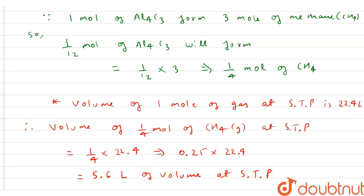So, this is our final answer: 5.6 liter, which is the volume of methane gas at STP.